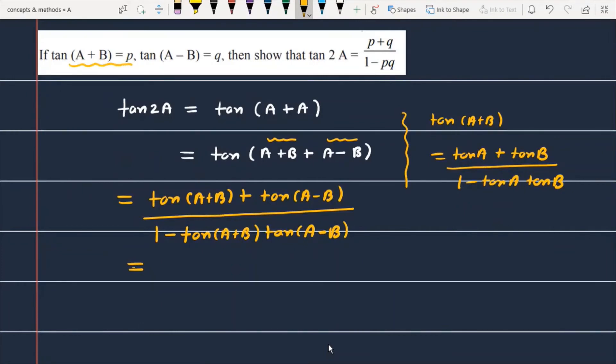So this becomes P plus Q over 1 minus PQ. And this is the proof for the given question.